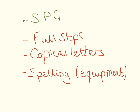You have to remember that this question, you also get marked on your spelling, punctuation and grammar — your quality of written communication. So you have to make sure you have your full stops in, your capital letters in, and your spelling has to be perfect, especially of equipment. For example, a Bunsen burner is spelled with a capital B because it is the name of the person, Bunsen. For spelling of your equipment, don't forget you can write your equipment on your candidate research notes so you make sure everything is spelled correctly.